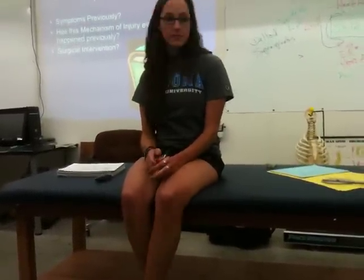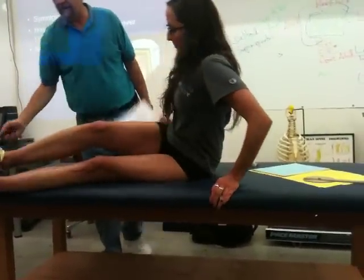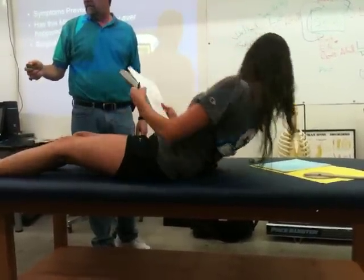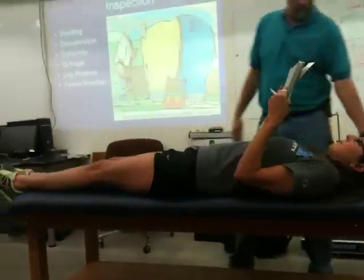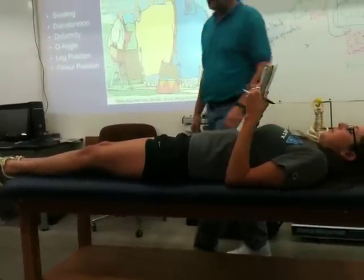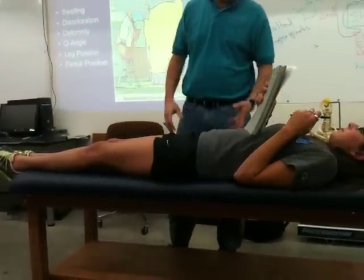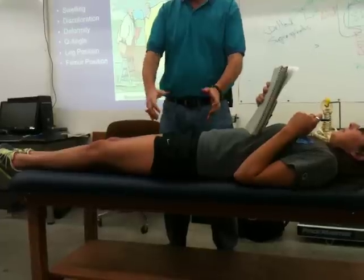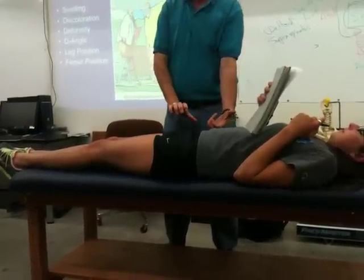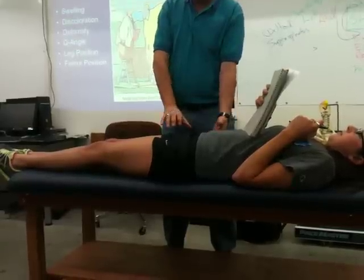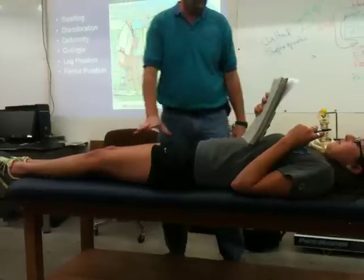If she were lying down, then what I would also look at is leg position and femur position. I look at that for a fracture or luxation. What I would expect to see is anteversion or retroversion — internal rotation with a dislocation and external rotation with a fracture.